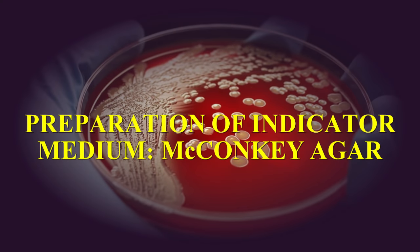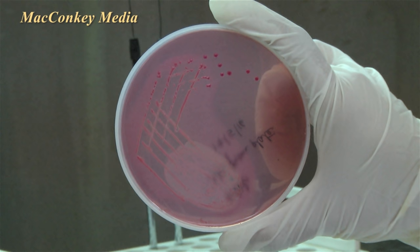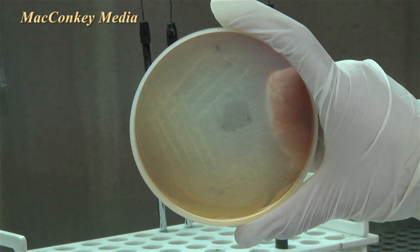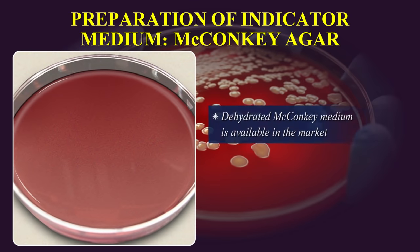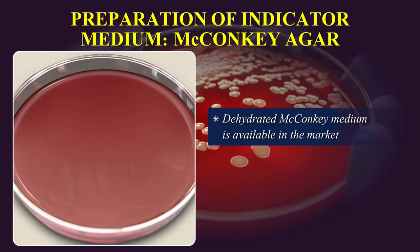Preparation of Indicator Medium — McConkey Agar. This is a useful medium for the cultivation of enterobacteria. It contains bile salts which inhibit the growth of gram-positive bacteria and promote the growth of only gram-negative bacteria. In addition, it contains a dye called neutral red which gives a pink colour to colonies of lactose-fermenting bacteria. Non-lactose fermenting bacteria, on the other hand, form colourless colonies. Dehydrated McConkey medium is available in the market and should be reconstituted according to manufacturer's instructions.